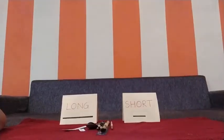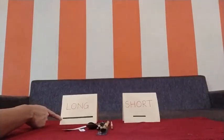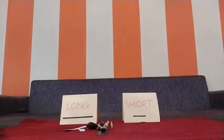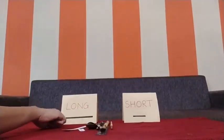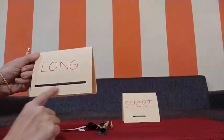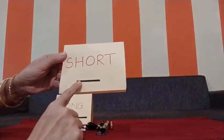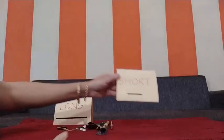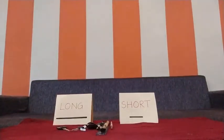Now we will learn long and short. You can see a long line here. Long and short are basically decided on the basis of the length. You can see the length here — you can easily see the length. This is a long line. Now look at this — this is a short line. So on the basis of the length, long and short these two terms are used.